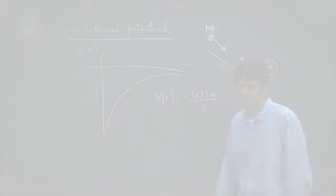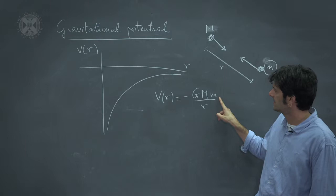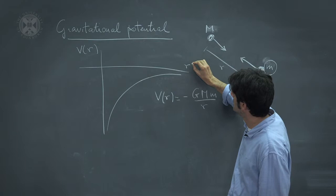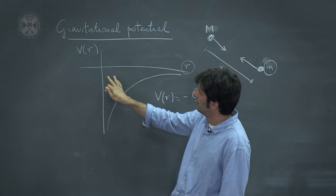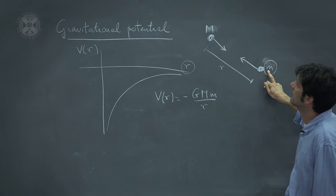So we have an explicit expression for the gravitational potential. We can actually sketch this function, and this is what it looks like. So at every point in space, which is specified by r here, we have an expression for the potential energy of the particle little m,